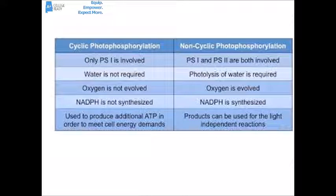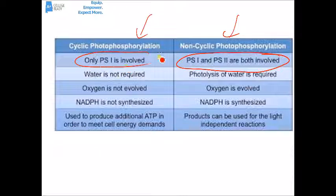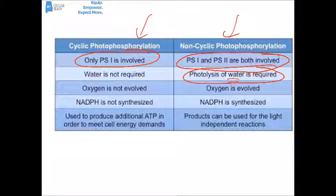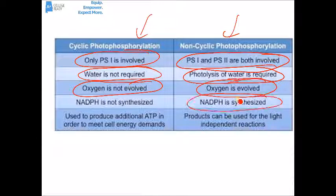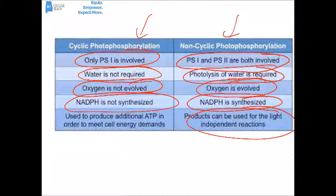Comparing the two processes: non-cyclic involves both photosystems; cyclic only involves PS1. During non-cyclic, photolysis of water occurs — water is the source of electrons; cyclic doesn't require water. Non-cyclic produces oxygen gas; cyclic does not. Non-cyclic produces NADPH; cyclic does not. Non-cyclic's products are used as part of the light-independent reactions. Cyclic photophosphorylation is used mainly to produce additional ATP that the cell needs for energy.